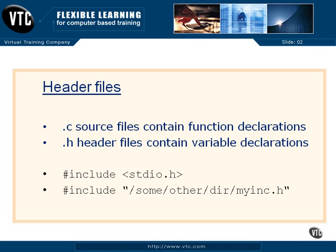.c source files should contain function declarations for your program. You can have a whole bunch of different C source files, and your development team can work all over the world — everyone works on their own source file and their own functions, compiles them, tests them, and then they're all brought together at the end to create a program.